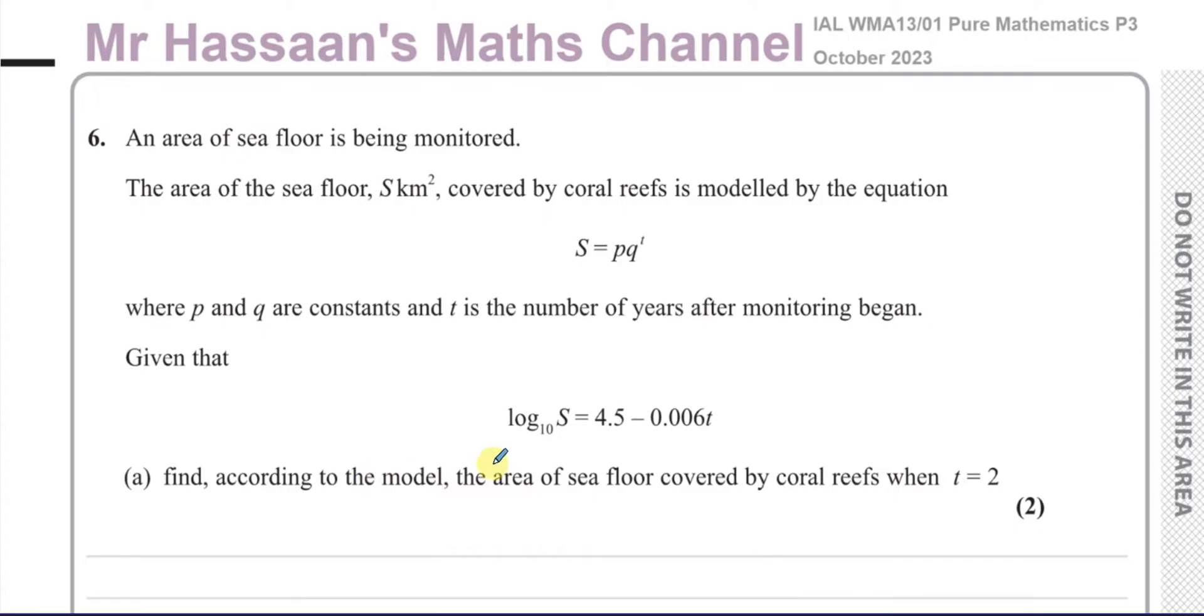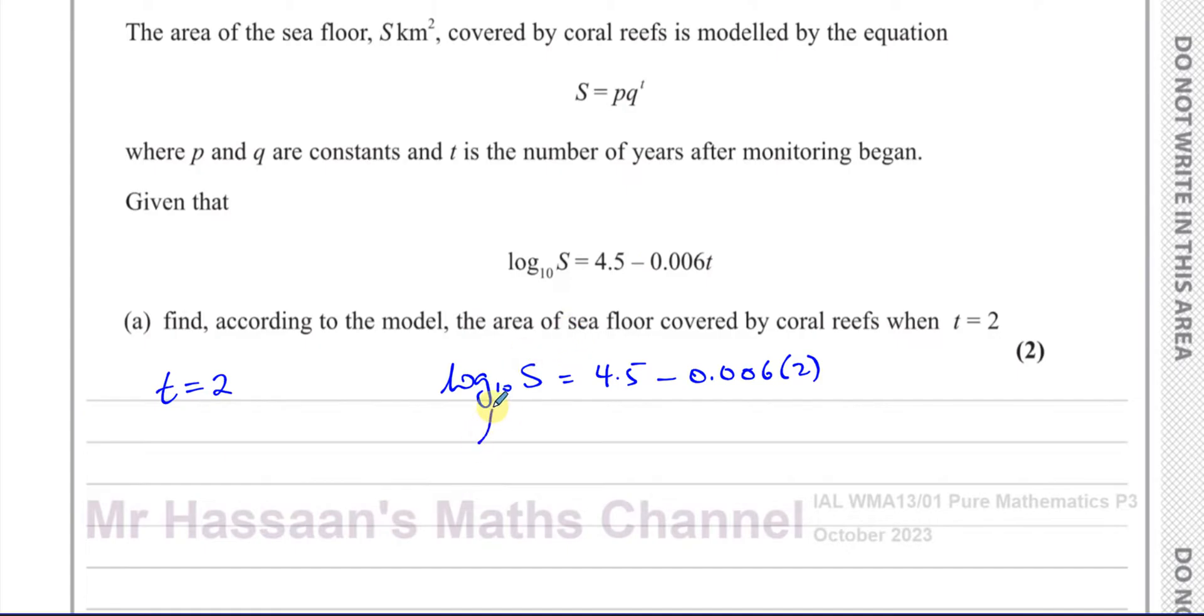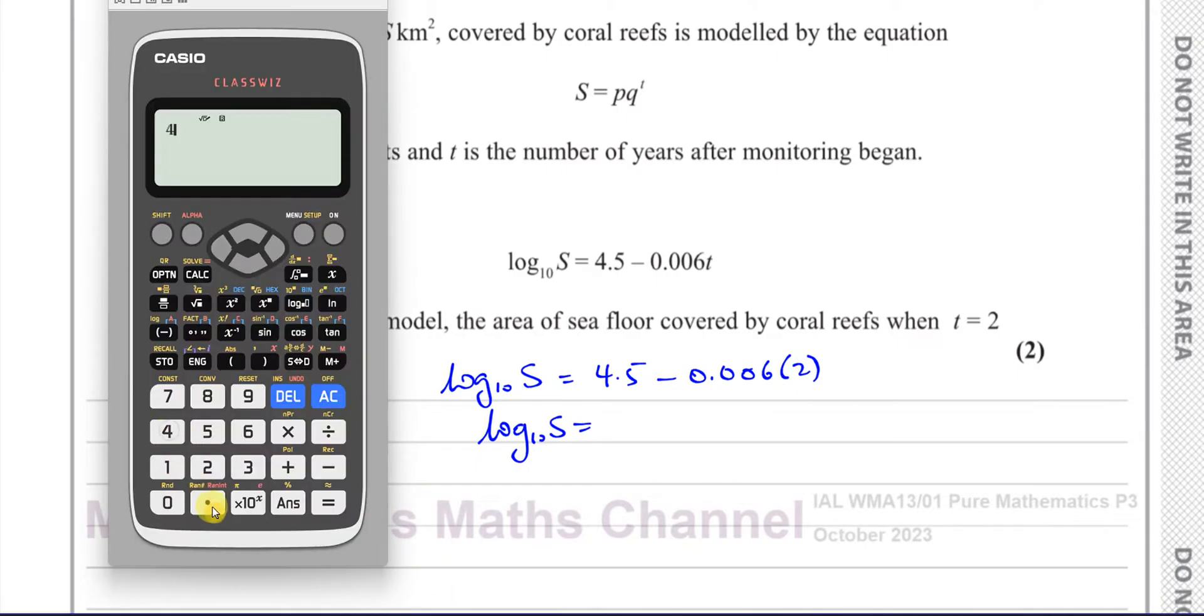Given that log₁₀(S) equals 4.5 minus 0.006t, find according to the model the area of the seafloor covered by coral reefs when t equals 2. Simply, you have to find what S is when t equals 2. So when t equals 2, you have log₁₀(S) equals 4.5 minus 0.006 times 2. Be careful, 0.006 times 2.